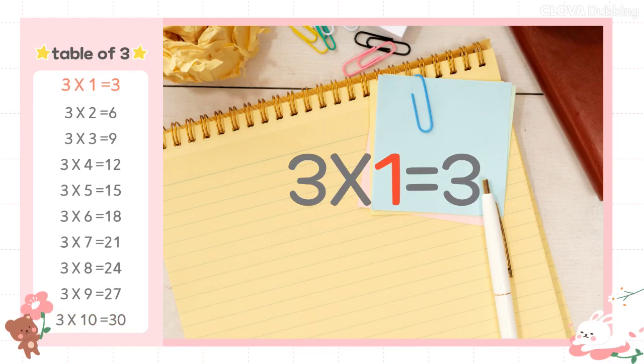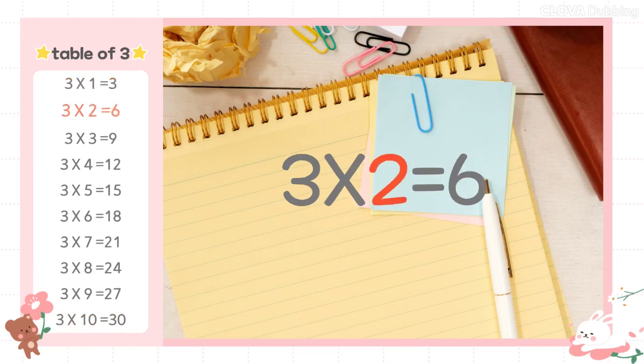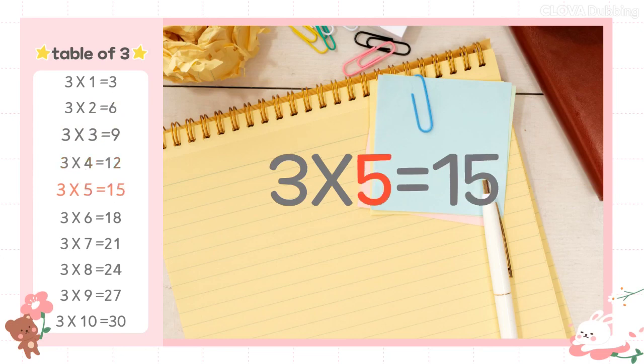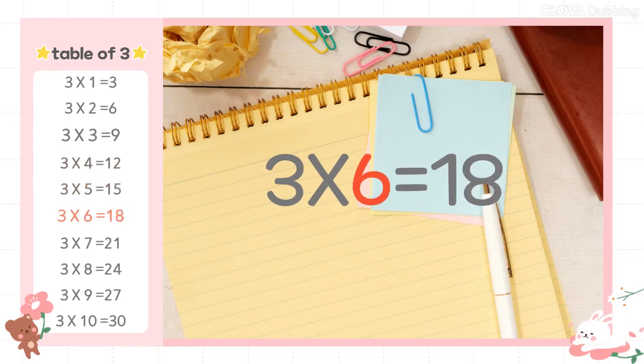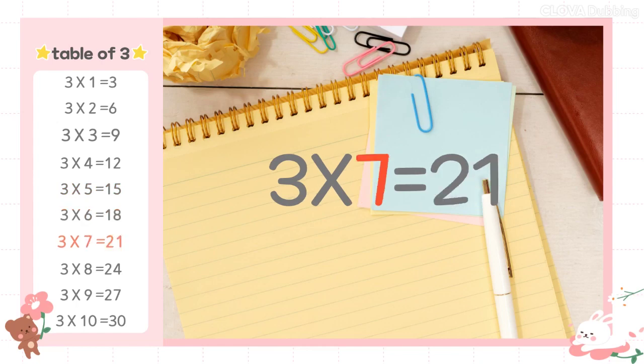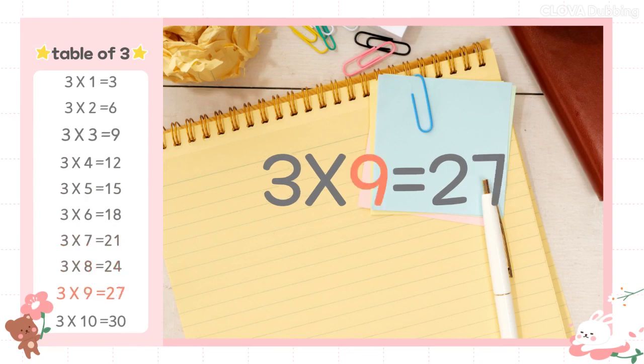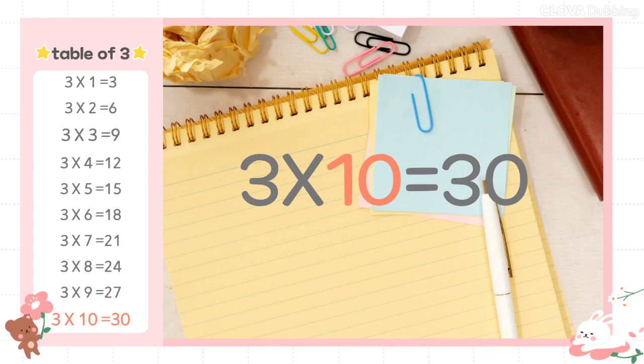3×1=3, 3×2=6, 3×3=9, 3×4=12, 3×5=15, 3×6=18, 3×7=21, 3×8=24, 3×9=27, 3×10=30